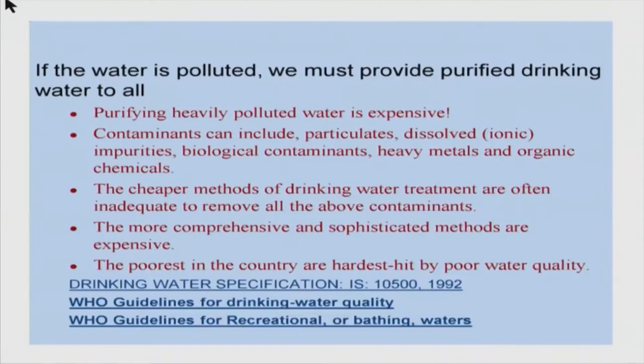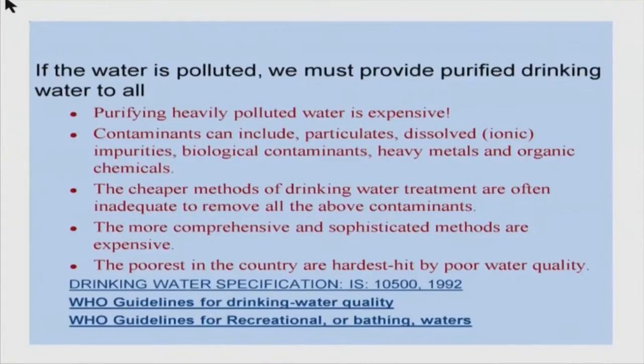Somehow we must purify the water. If it is polluted anyway, we simply purify the water before drinking it. But providing purified drinking water is not easy — water with so many pollutants, including untreated sewage, industrial waste, hardness, arsenic, fluoride contamination, and pesticides, is very difficult to treat. Cheaper methods of purifying water are not effective for all pollutants, and the more expensive methods cannot be applied everywhere.